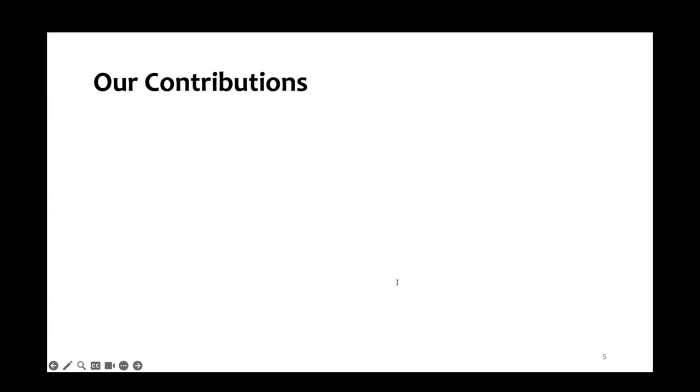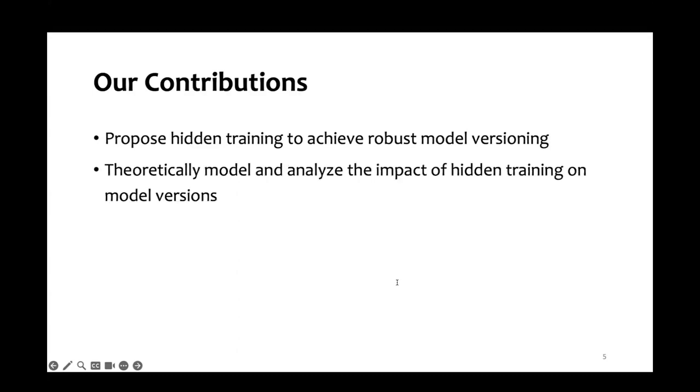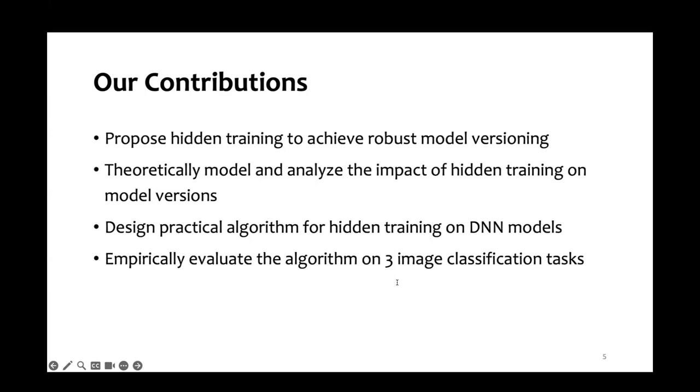Here is a list of our contributions, which also serves as an outline for my talk. We propose our approach hidden training against robust model versioning. We theoretically model and analyze the impact of hidden training. We also design a practical algorithm for hidden training on DNN models. And finally, we empirically evaluate our algorithm on three image classification tasks.